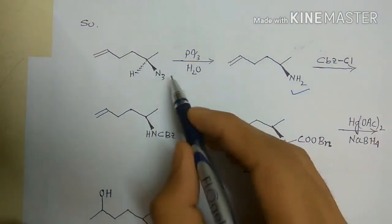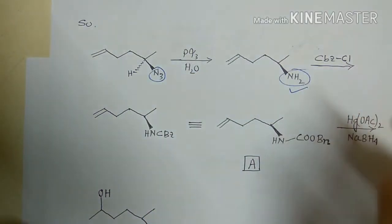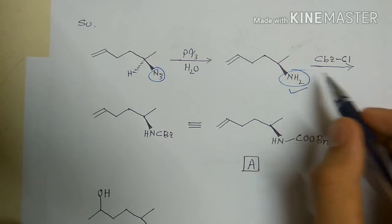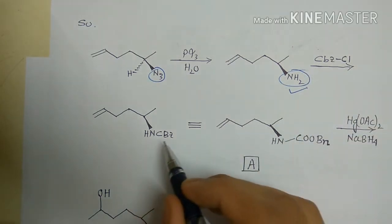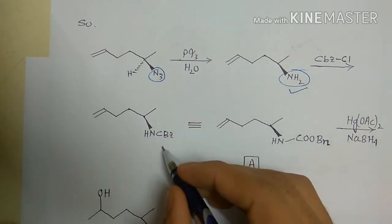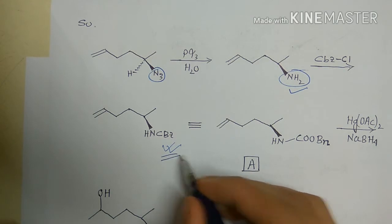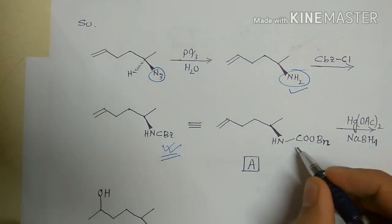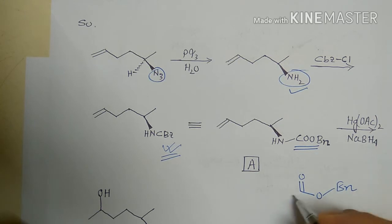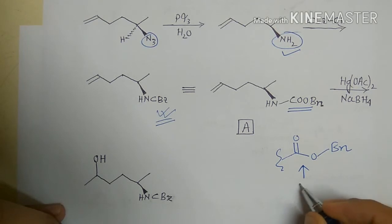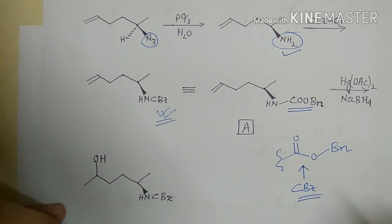The Staudinger reduction gives the amine compound — the azide is reduced to the amine. When this amine is treated with CBZ chloride (carboxybenzoyl chloride), the nitrogen is protected as the carboxybenzyl group, giving compound A. The CBZ group is essentially -COO-Bn, also written as the carboxybenzyl group.